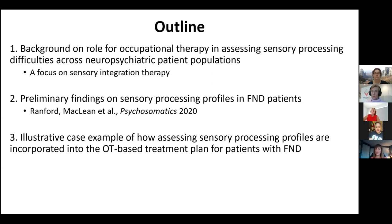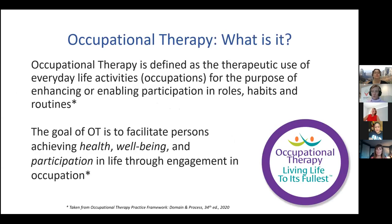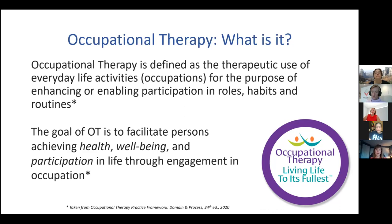We'll mostly do that through a case example so you can see how it translates into real life. Occupational therapy is defined as the therapeutic use of everyday life activities for the purpose of enhancing or enabling participation in life roles, habits, and routines. The goal of OT is to facilitate achieving health and well-being through the use of everyday activities, helping persons with FND engage in meaningful occupation-based activities.